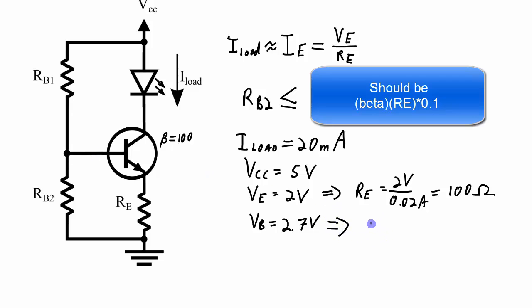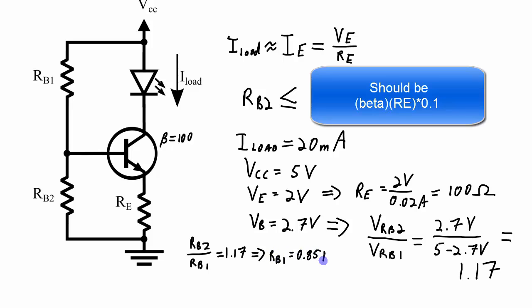That's because we have a 0.7 volt drop across this base emitter junction. So to get VE of 2 volts, we need VB of 2.7 volts. To get the VB of 2.7 volts, we need to make sure that the voltage across RB2 divided by the voltage across RB1 is equal to the ratio of the voltage RB2, which we need to be at 2.7 volts, divided by VRB1, which is going to be 5 minus 2.7 volts. So the ratio of VRB2 to VRB1 is 1.17.